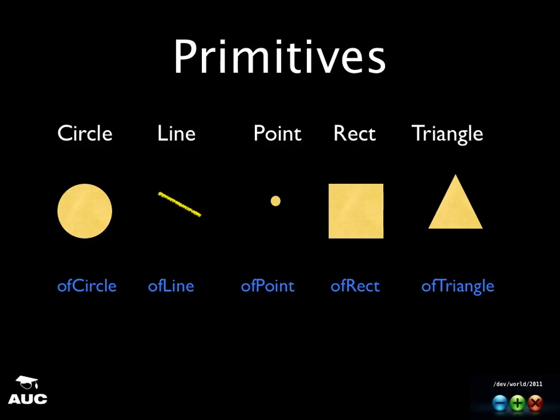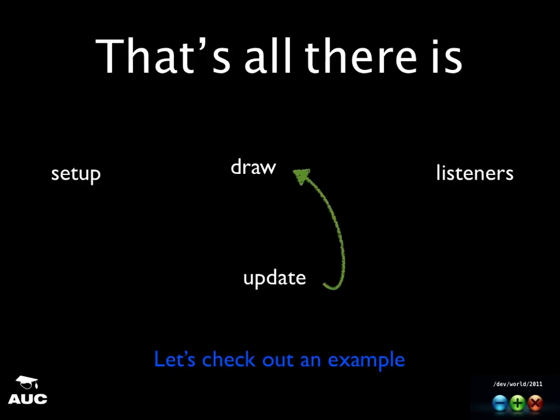It gives you a bunch of extra libraries for free: graphics, image, font, video player, texture, sound, serial - so if you like playing around with Arduinos and want to connect this stuff up to robots and control them. Some of the primitives you get for free in openFrameworks: the ability to draw a circle, line, point, rectangle, triangle, and so on. All the program really consists of three things: setup, which is called once, then a draw and update loop which just keeps spinning. You can target maybe 60 times a second for a nice frame rate, and then there are listeners - touch down, touch up, and so on.